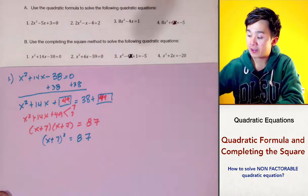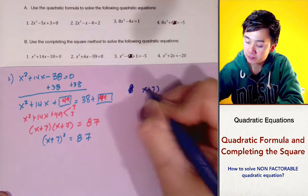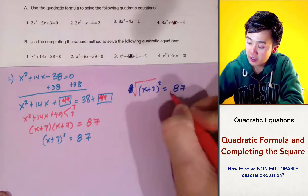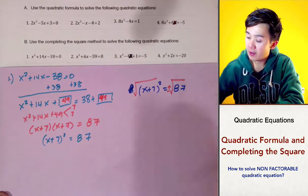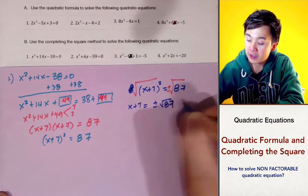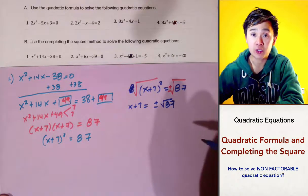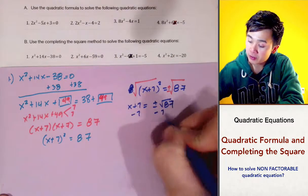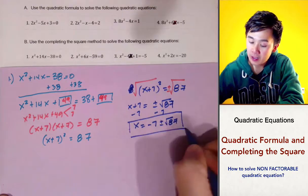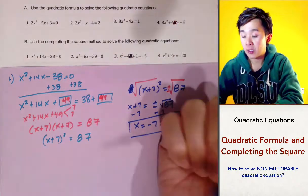The second half is to solve for x by taking the square root of both sides. So x plus 7 squared equals 87 — taking the square root gives us x plus 7 equals plus or minus the square root of 87. Since 87 doesn't have a perfect square factor, we leave it as the square root of 87. Subtracting 7 on both sides, we have x equals negative 7 plus or minus the square root of 87.